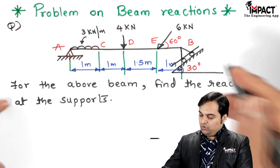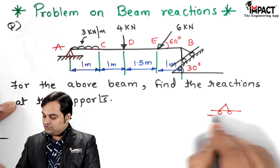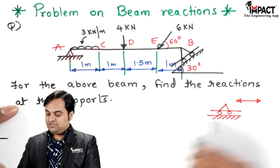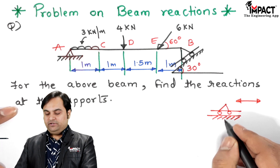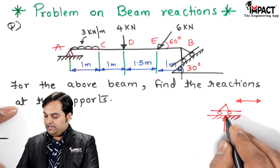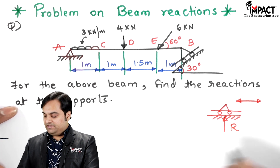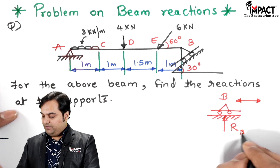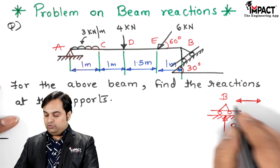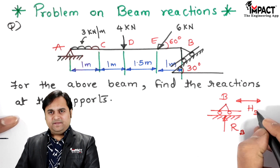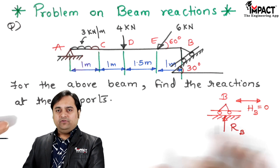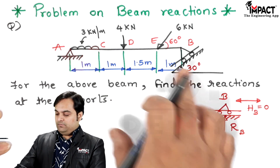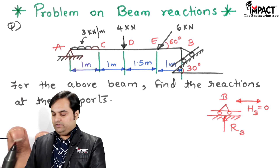If the roller is resting on a horizontal plane, it can move in the horizontal direction but cannot go vertically down, meaning there will be only a vertical reaction on that roller, denoted as RB. So in the case of a roller support, the horizontal reaction HB equals zero. But in this case the roller is inclined, so we need to resolve the reaction.